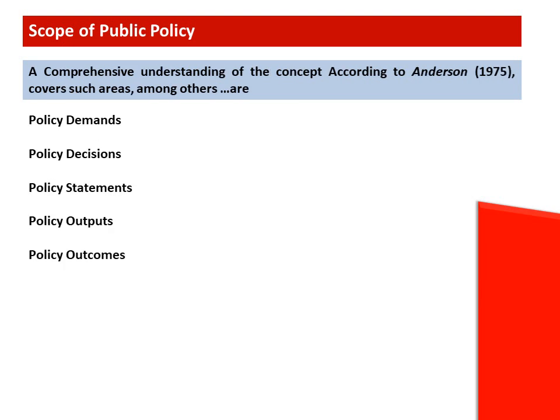For a comprehensive understanding of the concept, Anderson observes some areas as the scope of public policy. They are: policy demands, policy decisions, policy statements, policy outputs, and policy outcomes.